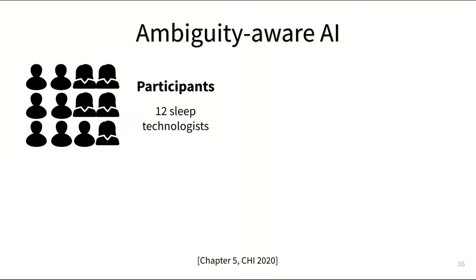We then conducted a within-subjects experiment with 12 sleep technologists to compare this ambiguity-aware AI system to a conventional one. Each of the 12 experts interacted with both AIs in a counterbalanced fashion, and the task was to review and correct as many of the AI suggestions as possible within a limited time of 15 minutes.